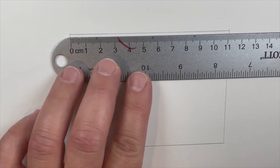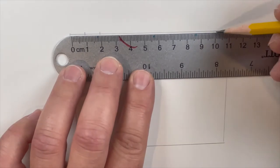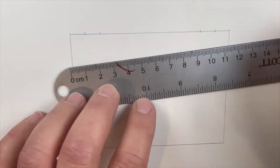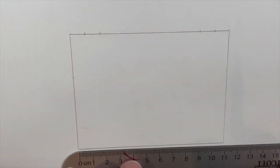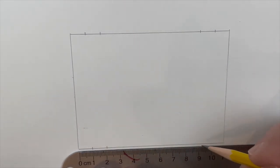Alright, the next step is going to be you're going to measure off at one centimeter and at two centimeters, basically all around your entire rectangle. So on top you're going to measure one centimeter and two centimeters on the bottom, right side and left side.